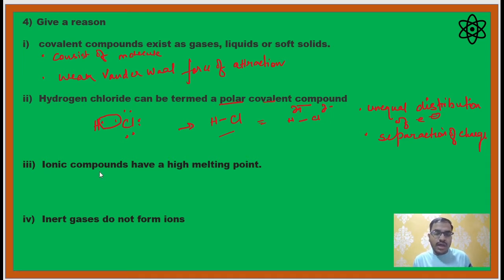The third reason: ionic compounds have a high melting point. It is very simple. Ionic compounds consist of ions. Now in solid state, the ions are closely packed. As they are closely packed, they have a strong force of attraction between two opposite ions.